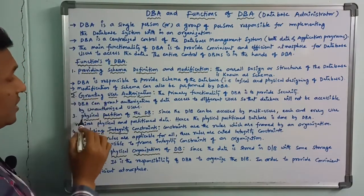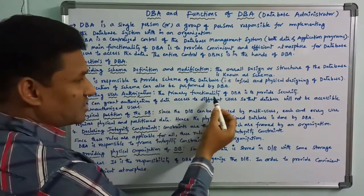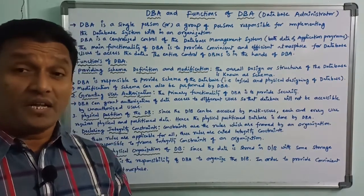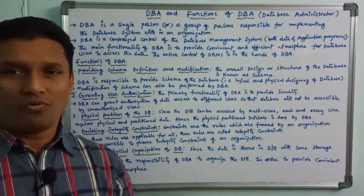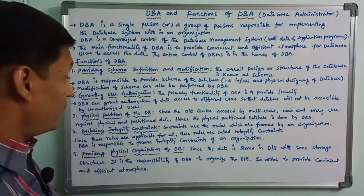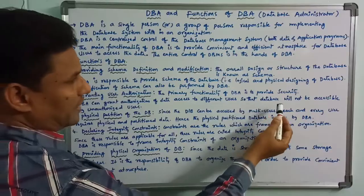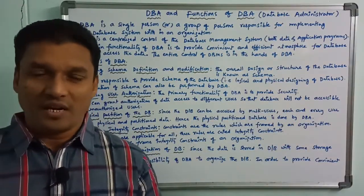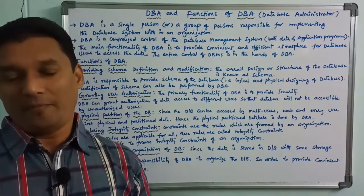The second function is granting user authorization. The primary functionality of DBA is to provide security — DBA is a security provider for the data. The DBA can grant authorization of data access to different users, so that the database will not be accessible by unauthorized users. Database users will have permission to access their information.